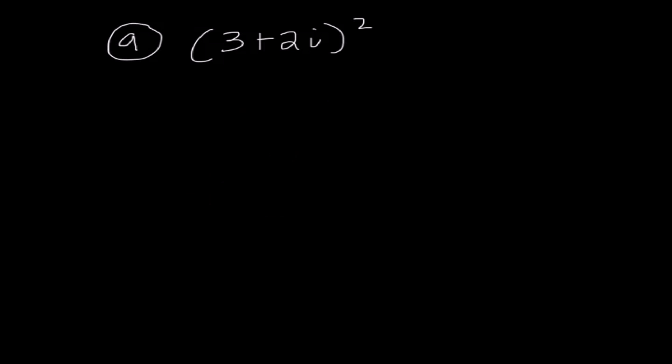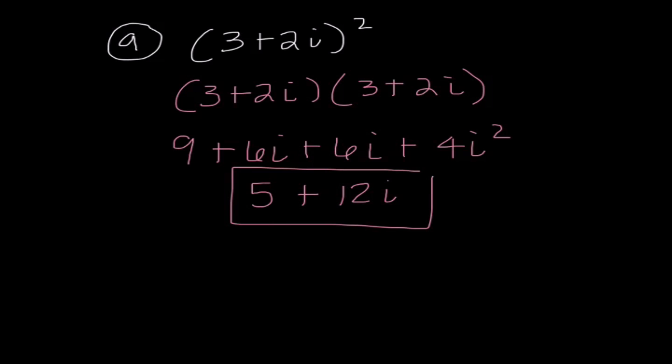I want to go through this next one because often we make mistakes on this. Whenever I'm squaring a binomial, that means I am multiplying it by itself. So I'm going to write it out twice. And when I FOIL, I get 9 plus 6i plus 6i plus 4i squared. Once again, I know that 4i squared is the same thing as negative 4. Negative 4 plus 9 is 5. 6i plus 6i is 12i. So I have 5 plus 12i.